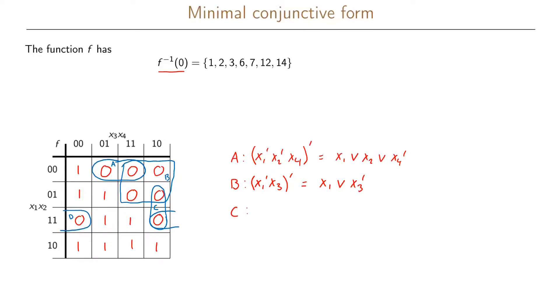Then the next is C which is x2, x3, x4 prime. We prime this using De Morgan's law and we get x2 prime or x3 prime or x4.